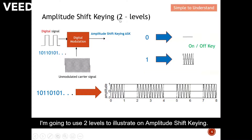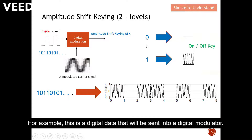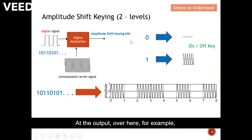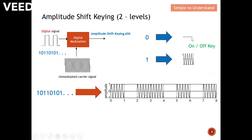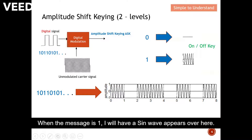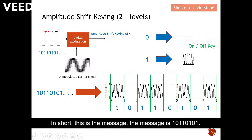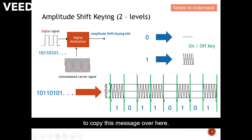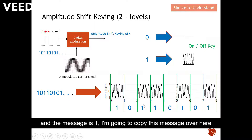Let's understand amplitude shift keying using two levels. For example, digital data is sent into a digital modulator. At the output, if the message is zero I will have no waveform, and when the message is one I will have a sine wave. So the message is 1, 0, 1, 1, 0, 1, 0, 1. If the message is one I copy this waveform over here, and if the message is zero I copy this one.